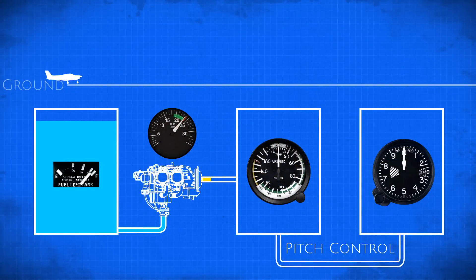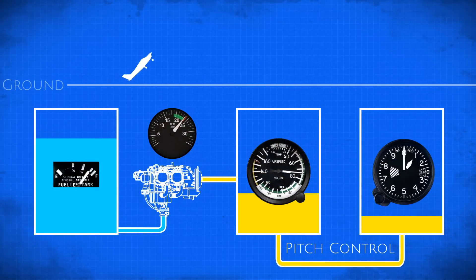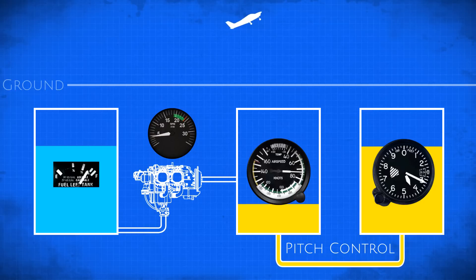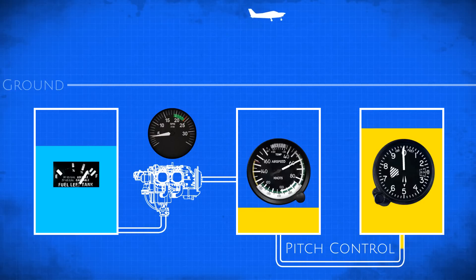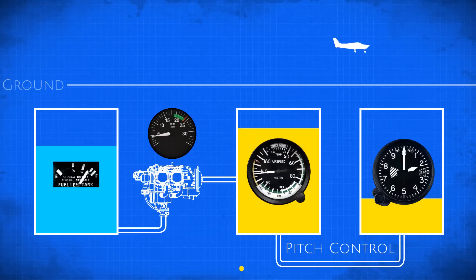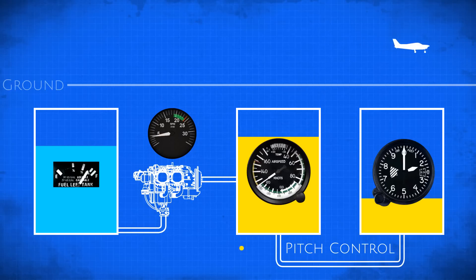Starting from the ground, we must first convert some of our fuel energy into airspeed and altitude to get up in the air. Once we're in the air, the pilot can choose to trade off kinetic energy for potential energy by climbing, or vice versa by diving and gaining airspeed. Unfortunately, we can't keep trading these back and forth forever, because there's a leak in the airspeed energy tank, and that's called drag.